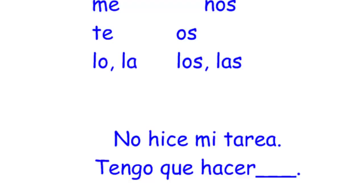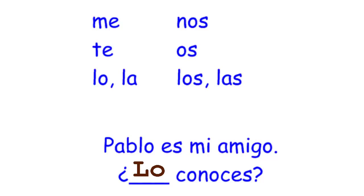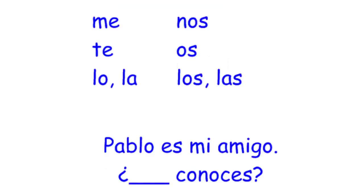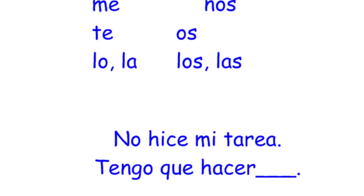Next example: No hice mi tarea — I didn't do my homework. Tengo que hacer — I have to do it. So what is 'it' going to be for homework? It's going to be la, because it's la tarea — tengo que hacerla. Wait, because on the last example we put it before the verb, and now we're connecting it to the end. Just like with reflexive verbs, the pronoun either goes before the conjugated verb or connected to the infinitive. Before the conjugated verb or connected to the infinitive — in most cases.